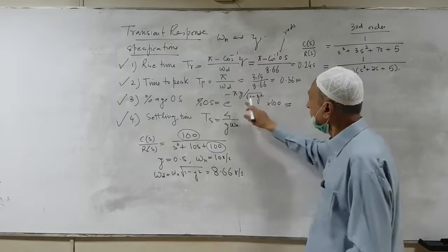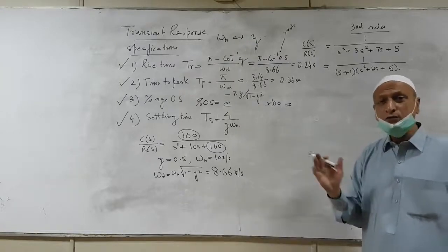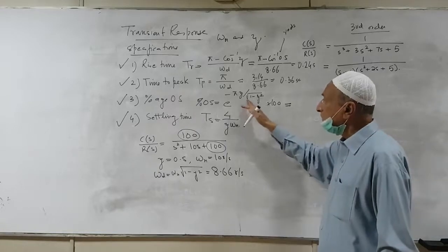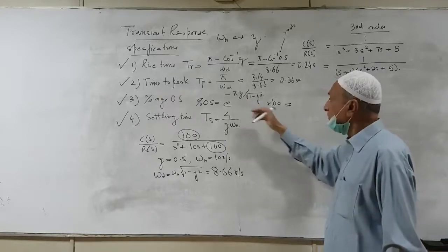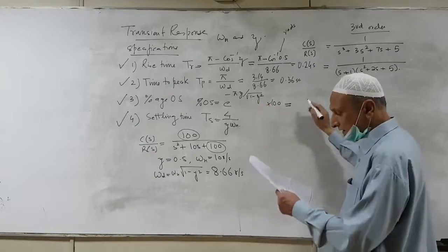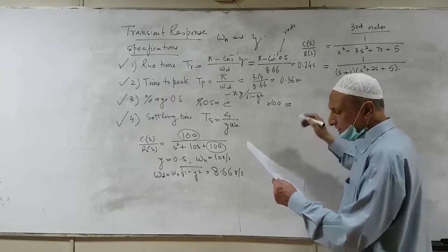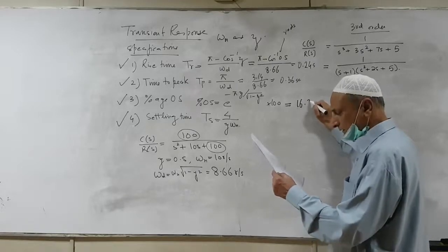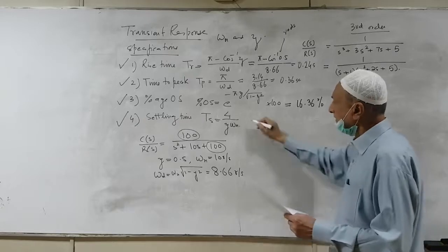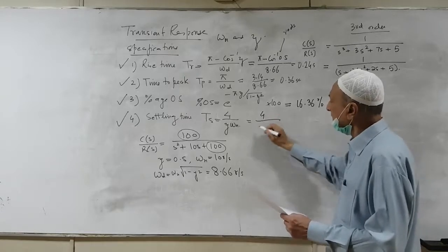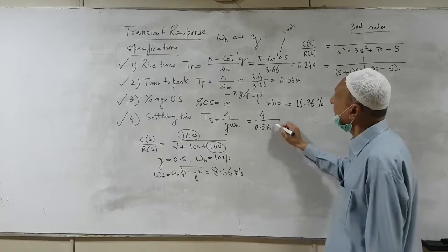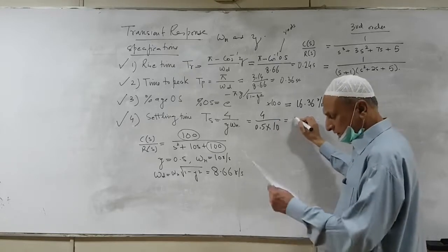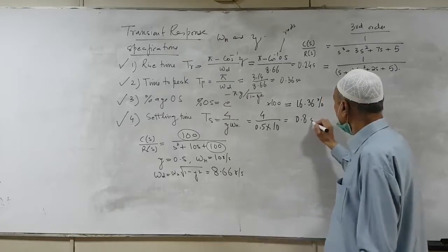Percentage overshoot depends only upon zeta — there is no omega n and no omega d in the expression. If you put all the values and calculate through your calculator, it comes out to be about 16.36 percent. The settling time is simply 4 divided by zeta times omega n. Since zeta is 0.5 and omega n is 10, this comes out to be about 0.8 seconds.